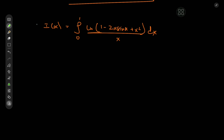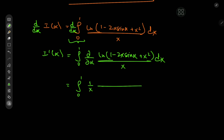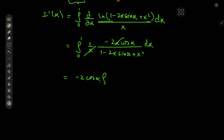Now we differentiate with respect to α. On the left we get I′(α), and on the right we switch operators to get the integral from 0 to 1 of the partial derivative with respect to α of log(1 minus 2x sine(α) plus x squared) divided by x, dx. Differentiating and simplifying, we get negative 2 cosine(α) times the integral from 0 to 1 of dx divided by (x squared minus 2x sine(α) plus 1).